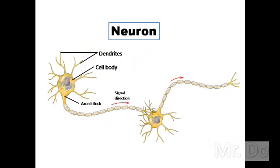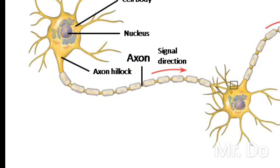It consists of, just like a regular cell, a cell body, the nucleus, and such — but it also has extra structures, like the dendrites. When the information is received by the dendrite, it is then sent along a really long chain called the axon. Once the message is relayed to the end of the axon, it will be sent to the dendrite of the next neuron, and then it repeats.